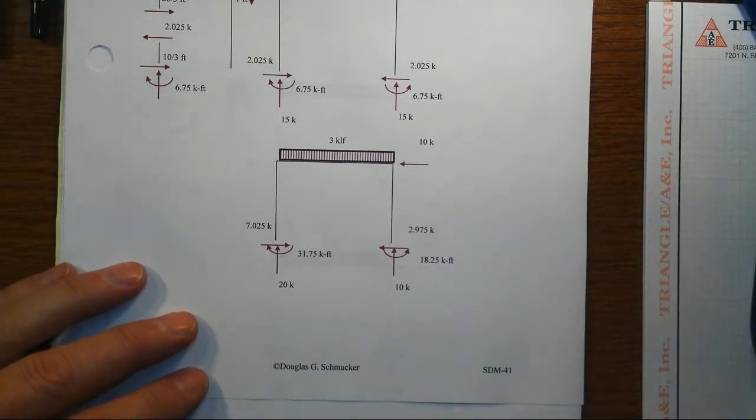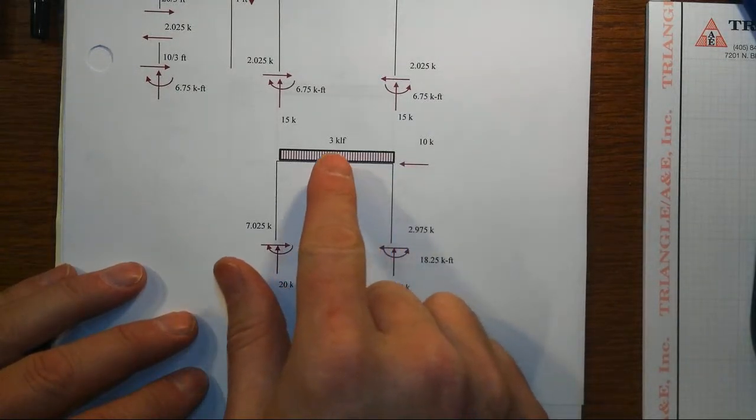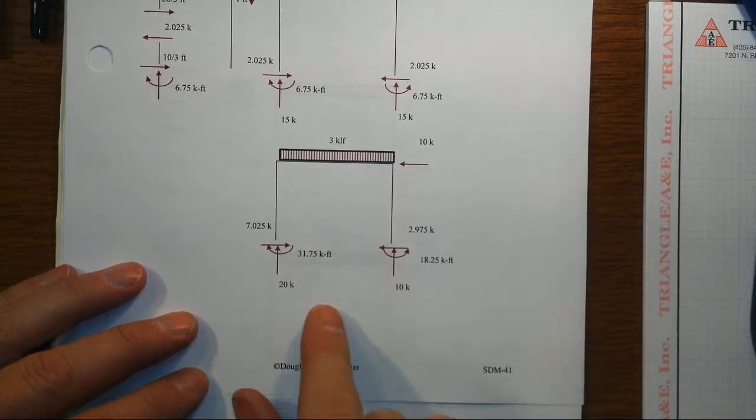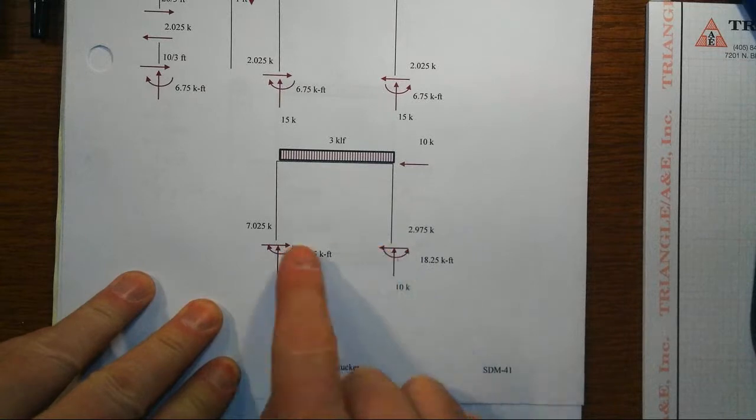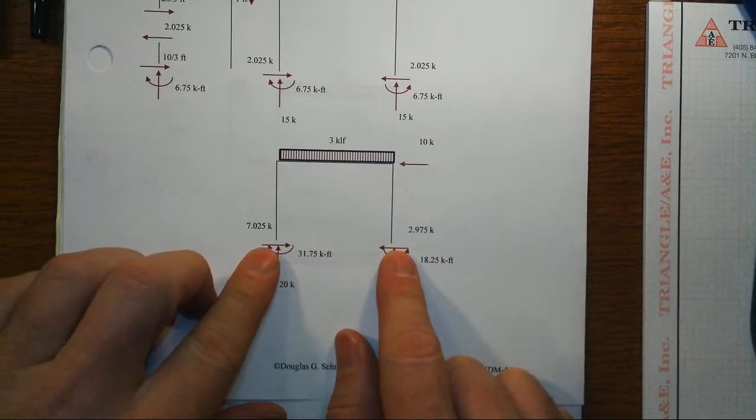Put that all together, with the combination of gravity load and the lateral load, we get the moments that resulted down here at the bottom and the shears.